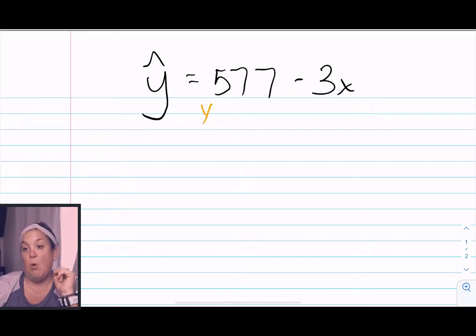So here our b sub zero or our y intercept is going to be the 577, and then our slope is going to be negative three.